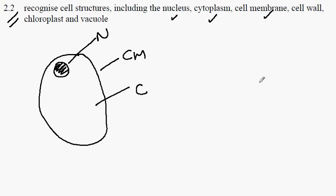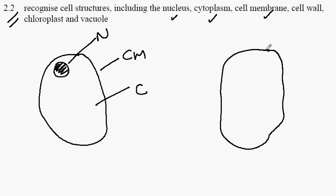Plant cells have additional features. They too will have a cell membrane, the nucleus, and the cytoplasm. However, in addition,